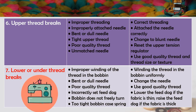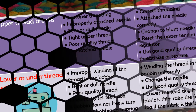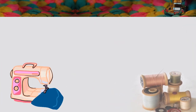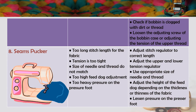Causes of lower thread breaks: improper winding of thread in the bobbin, bent or dull needle, poor quality thread, incorrectly set feed dog, bobbin does not turn freely, or too tight bobbin case spring. Remedies: wind the thread in the bobbin uniformly, change the needle, use good quality thread. Lower the feed dog if the fabric is thin; raise the feed dog if the fabric is thick.